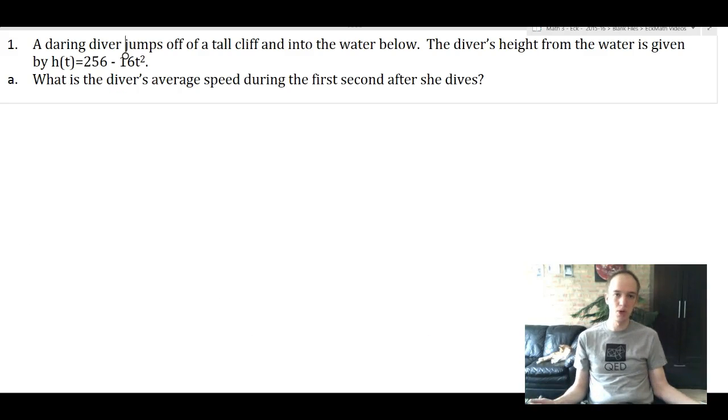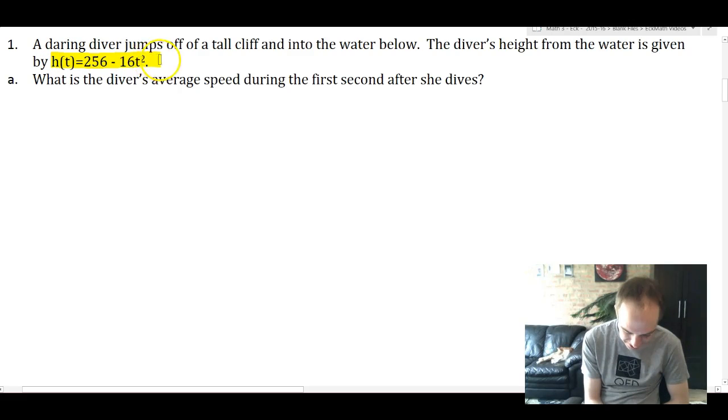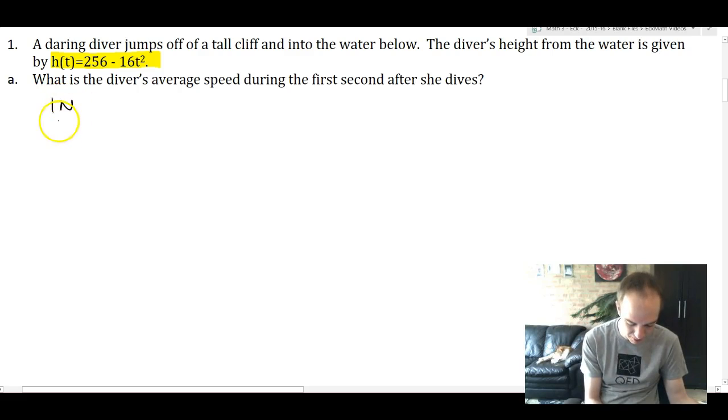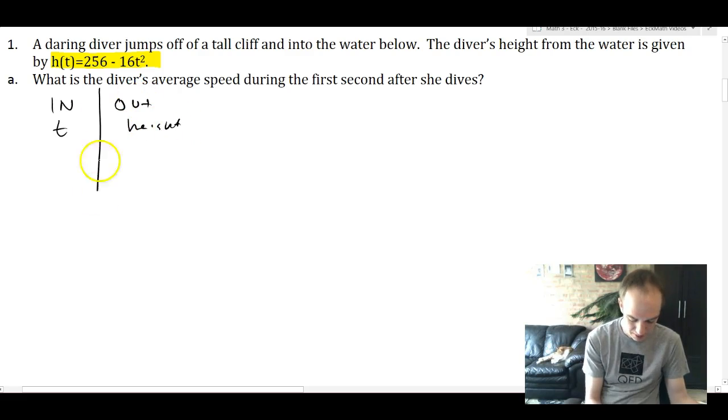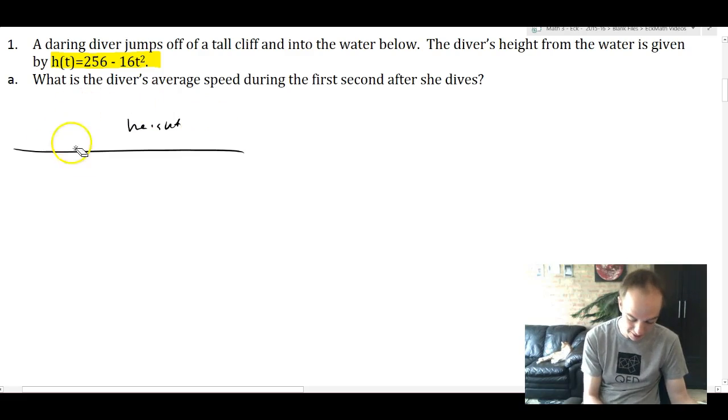Now we're back to the real small world content. Even though this is a question about diving, this is from small world because it's about average rates and average change. We have a story about a daring diver jumping off of a tall cliff. We have a function, h of t, that tells us her height from the water. One way that you could investigate this is by making an in-out table where in will be the time and out will be the heights. We're not going to carry through with this table because we're going to jump straight to the mathematics part.